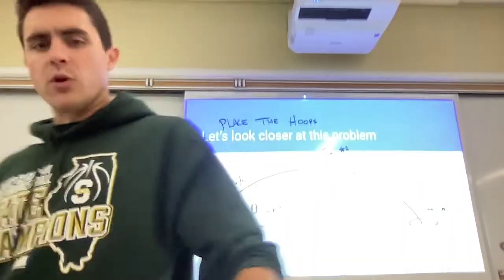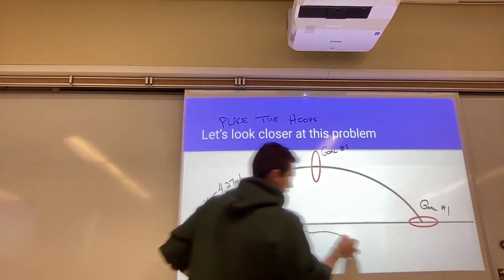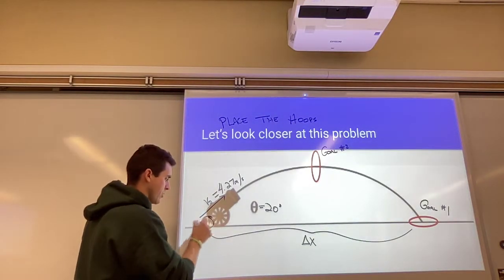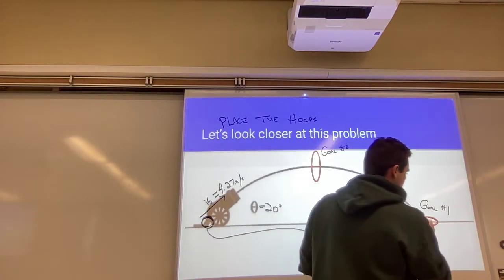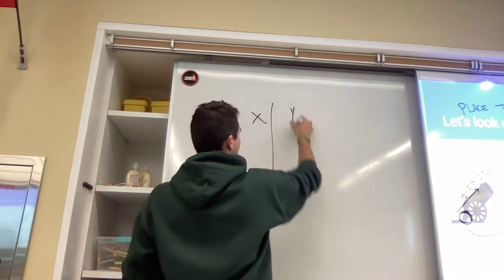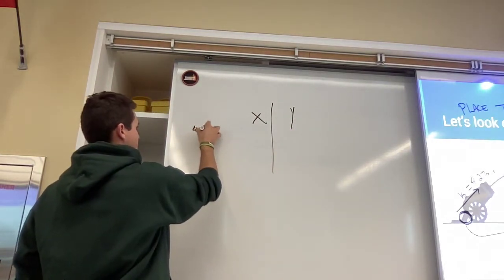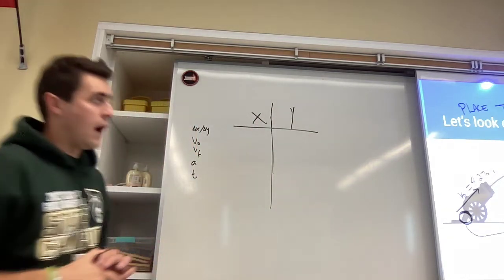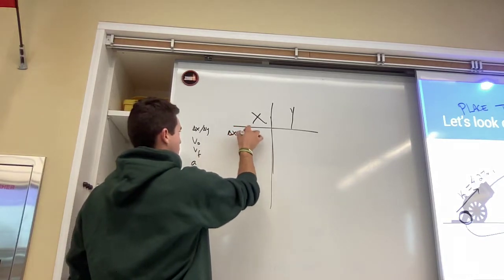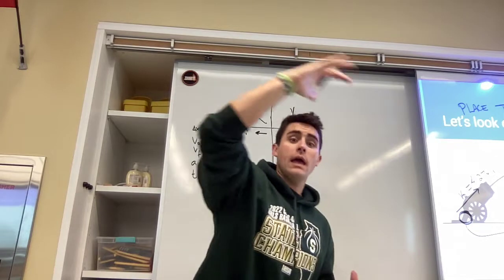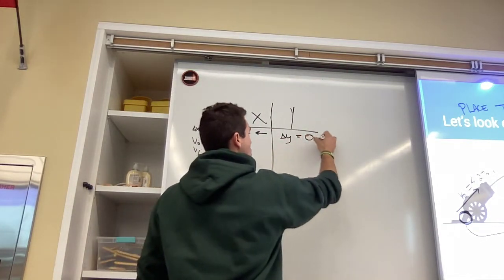Let's do goal one first. Goal one is figuring out the range — the total change in x over the entire path. This marble starts at the ground and goal one is also placed at the ground, so the total change in height is zero. It goes up and comes back down exactly where it started. Let me organize my variables: x variables and y variables, with displacement, initial velocity, final velocity, acceleration, and time. The x displacement is what I'm solving for — my big answer for goal one. In the y direction, because the object goes up and comes back down to the same height, the net change in y displacement is zero.